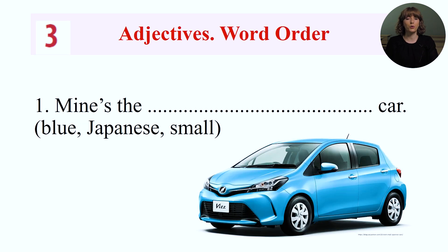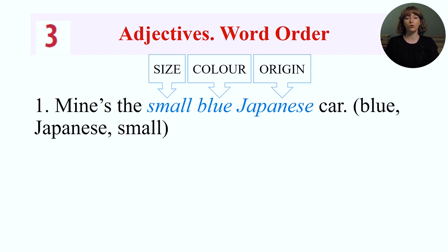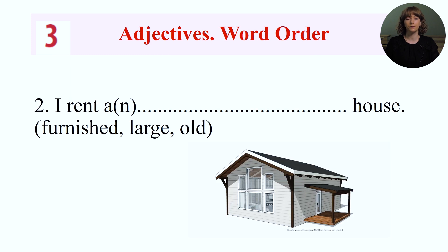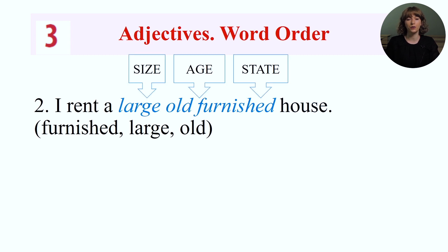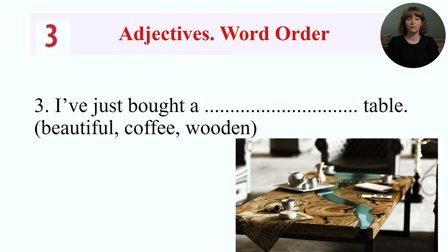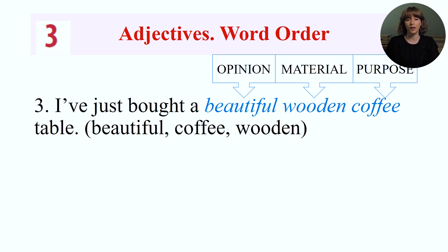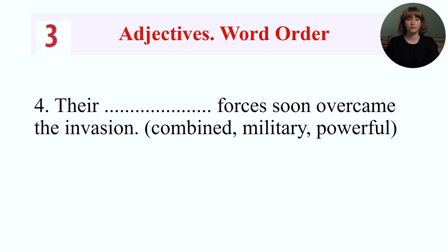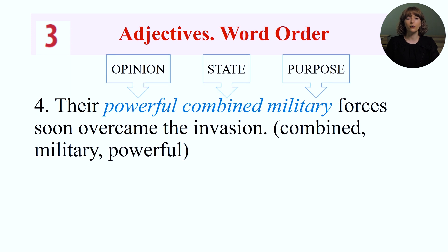Now let's put the theory into practice. Put the adjectives in parentheses in the most appropriate order. 'Mine is the small blue Japanese car.' 'I rent a large old furnished house.' 'I've just bought a beautiful wooden coffee table.' 'Their powerful combined military forces soon overcame the invasion.'